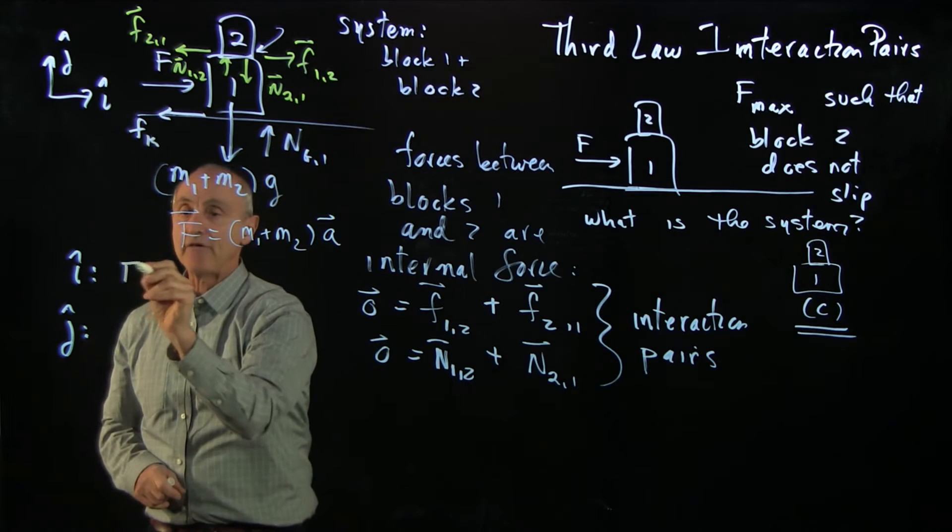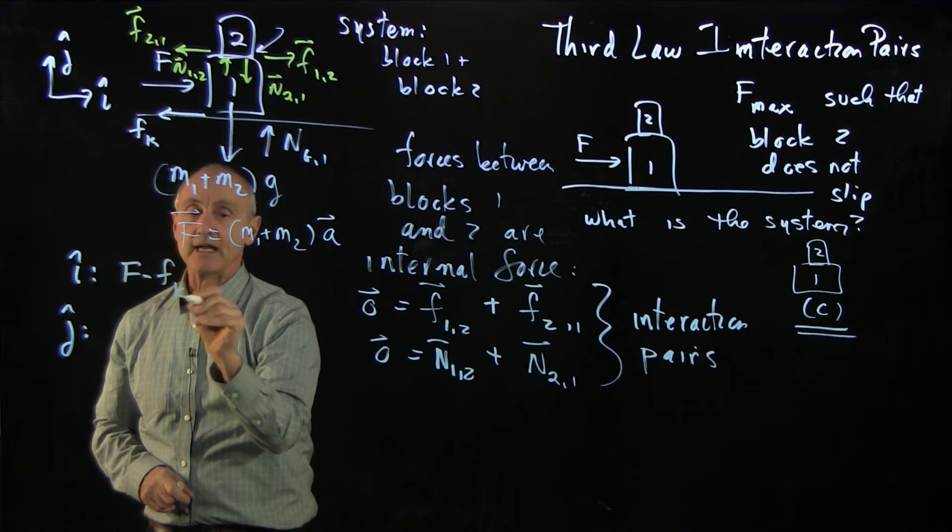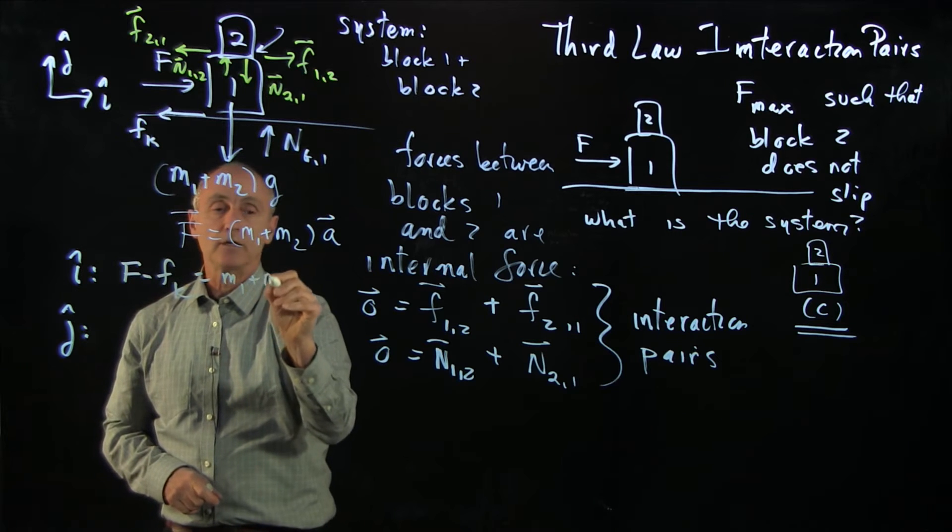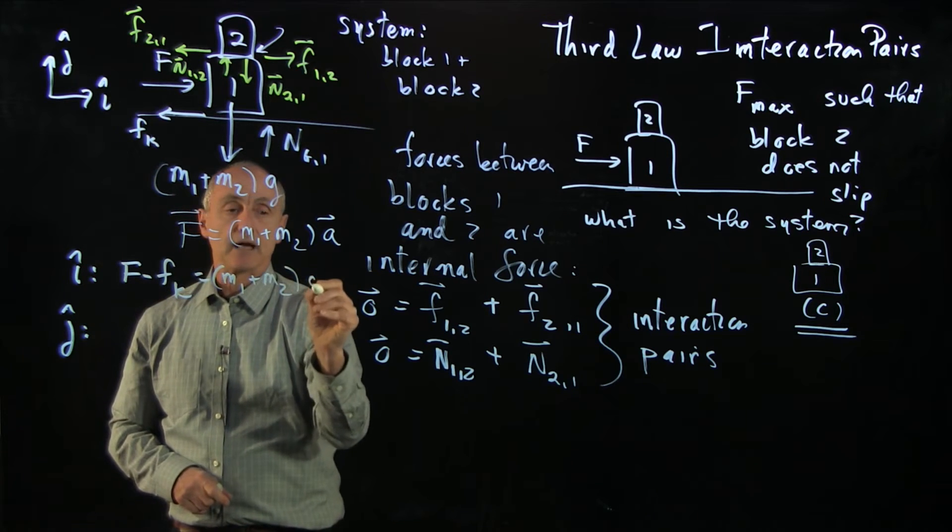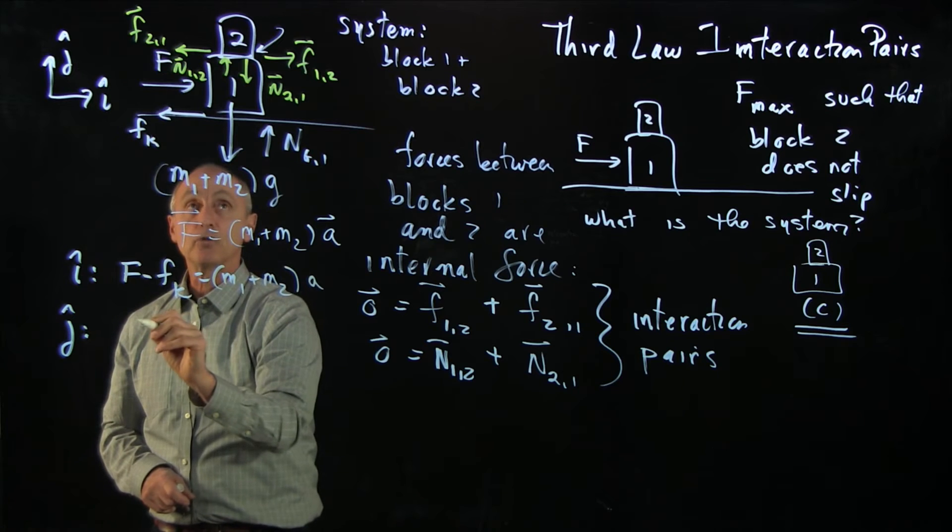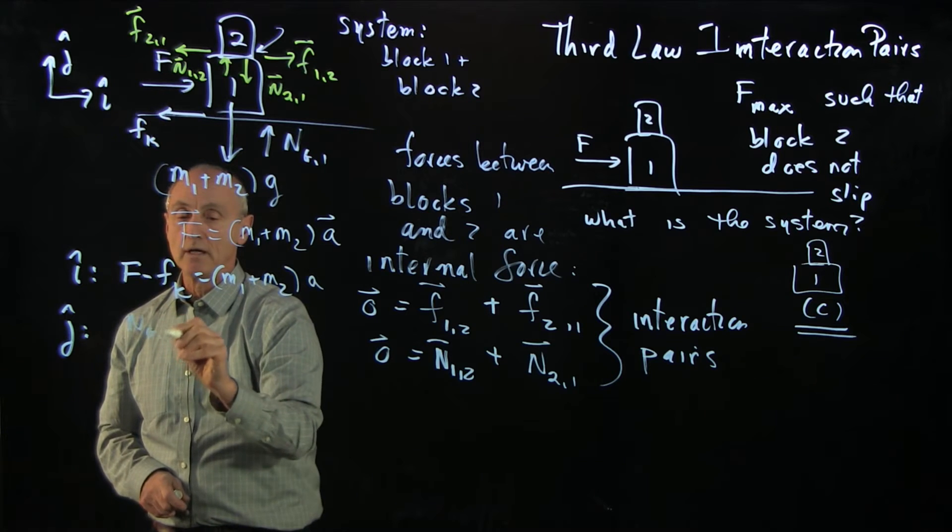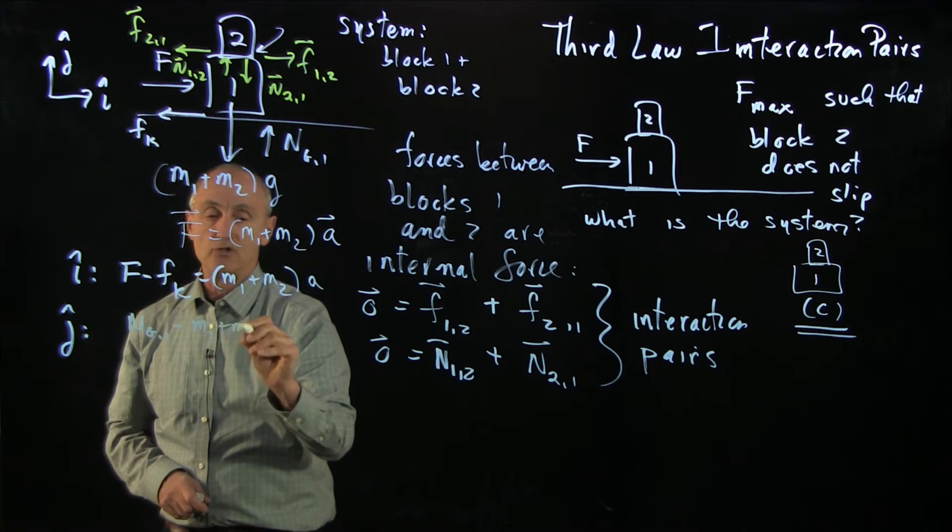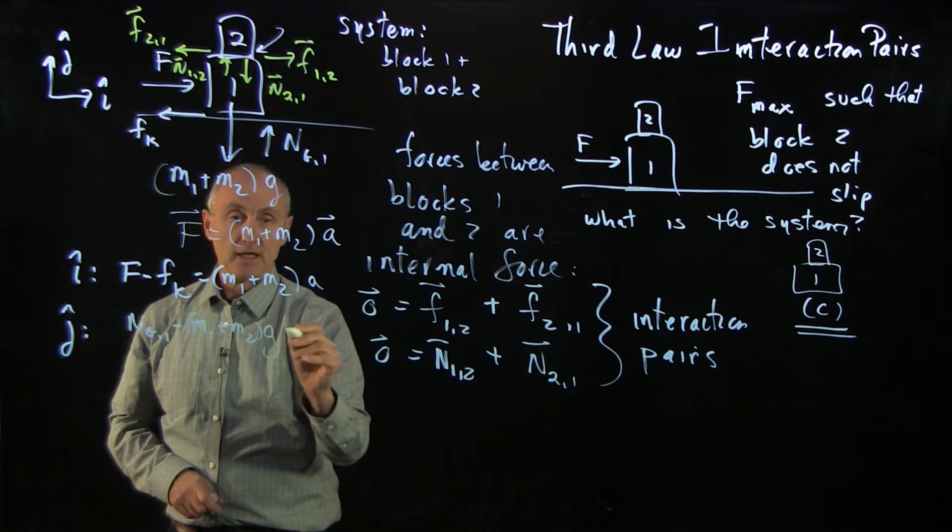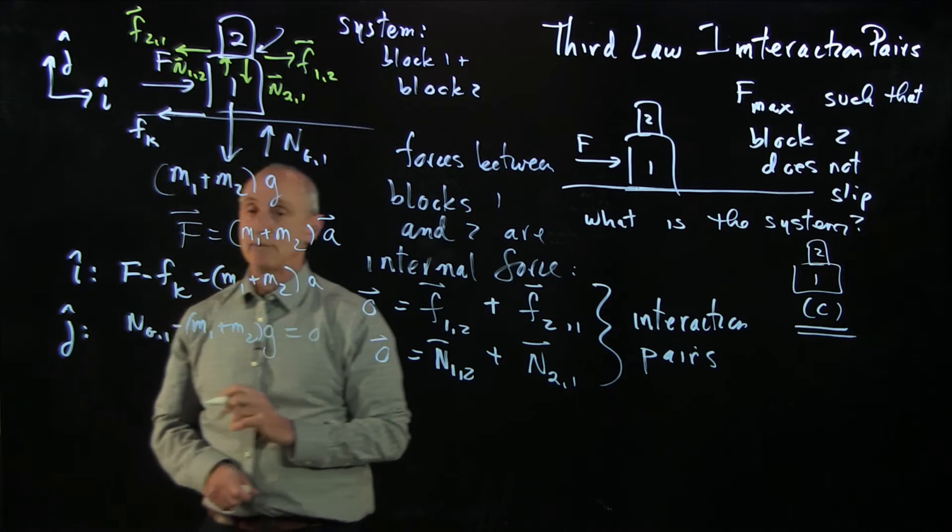And what we have is F minus F kinetic equals M1 plus M2 times A. And in the vertical direction, we have N ground 1 minus M1 plus M2 g equals zero. That gave us our same result before.